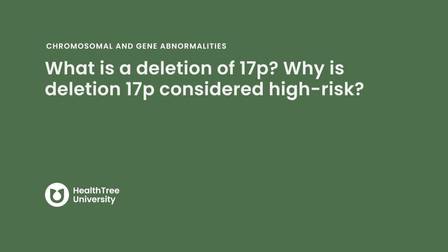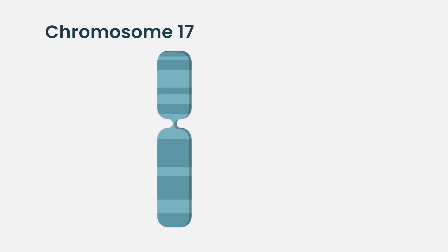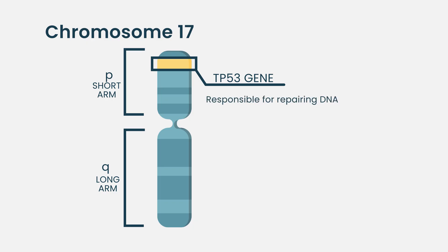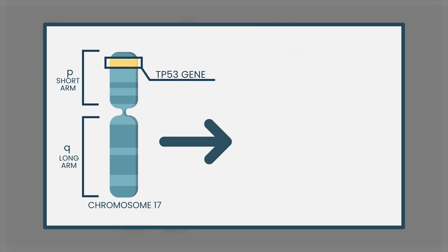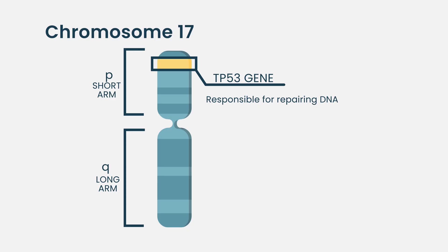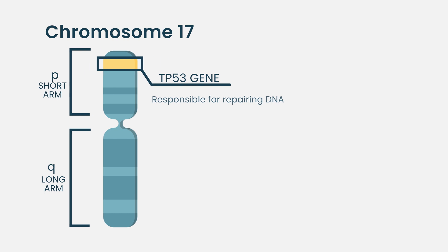What is a deletion of 17P? Why is deletion 17P considered high risk? On the 17th chromosome, on the short arm — the short arm of the chromosome is the P arm and the long arm is Q — there is a gene called P53, responsible for DNA repair. The TP53 gene provides the instructions for making the P53 protein, which is responsible for DNA repair. So when the genetic material in a cell is damaged, P53 repairs that DNA.